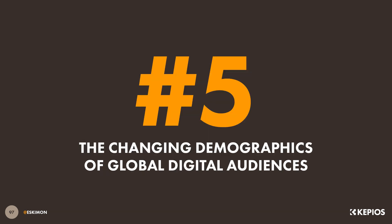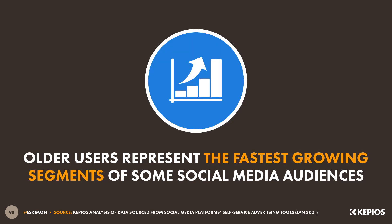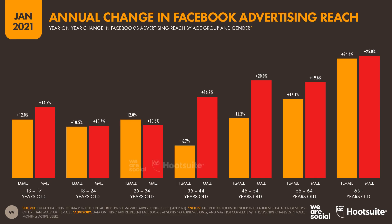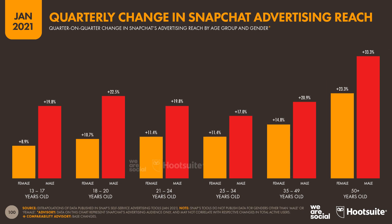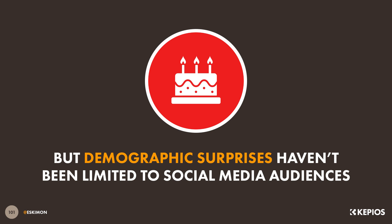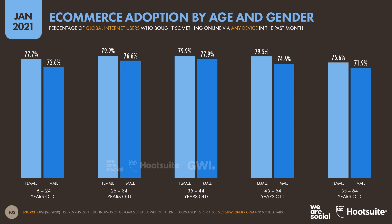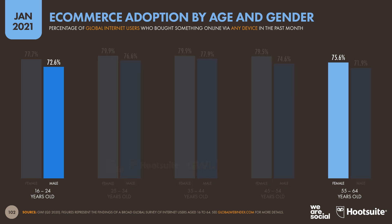We'll stick with social media for our last section, which looks at how the demographic profile of the world's online audiences has been evolving in recent months. Perhaps one of the more surprising findings in this year's data is that older users now represent the fastest growing segments of a number of the world's top social media platforms. For example, the over-65s are currently the fastest growing audience on Facebook, with the platform's ad reach in this age group increasing by a quarter over the past year. But Snapchat's ad audience data reveal some even more startling trends, with reach amongst men aged 50 and above increasing by a third in the final three months of 2020 alone. And once they get online, older internet users are just as likely as their children to shop online — the data reveal that women aged 55 to 64 are actually more likely to have made an online purchase in the past month than men aged 16 to 24.